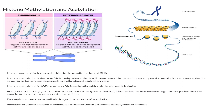A trick to remember what acetylation does: think of acetylation as making DNA active, and methylation as making DNA mute. To sum it up, acetylation unwinds the DNA from the histones so you can make mRNA or other types of RNA more easily. Methylation winds the DNA closer to the histones to make it less likely to be transcribed.